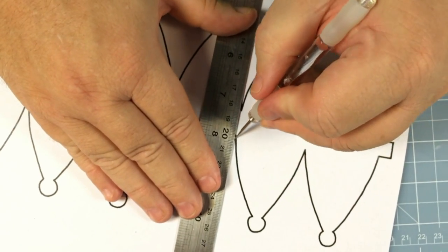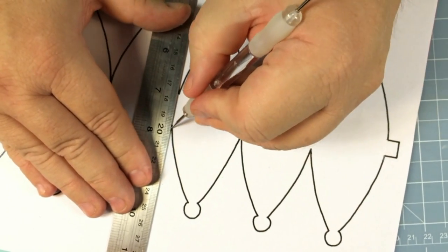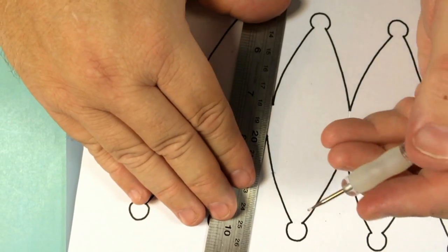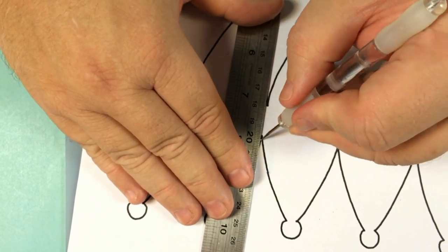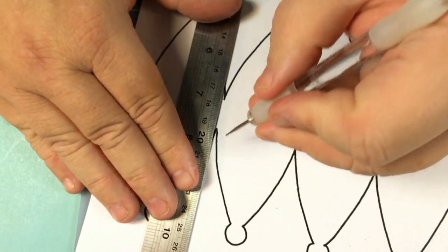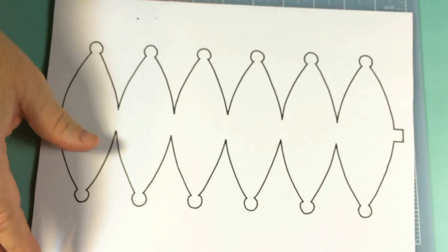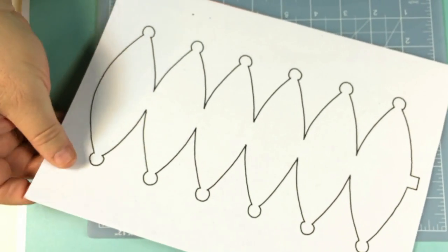On the bigger ones, you'll probably want to do that more free-handed because you'll get that curve in. But on these smaller ones, the curve is so hardly there, you can get away with just a straight line. So that's all I've done and now all I've got to do is cut this out.